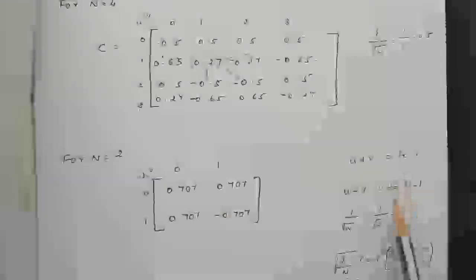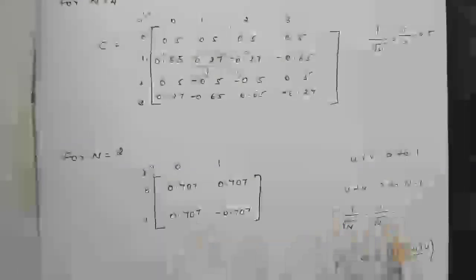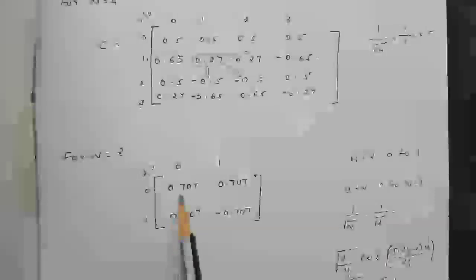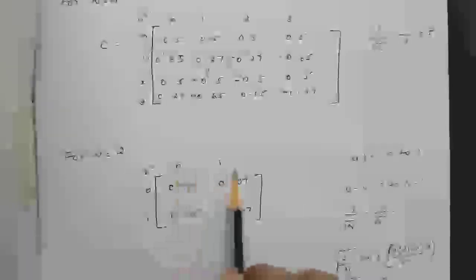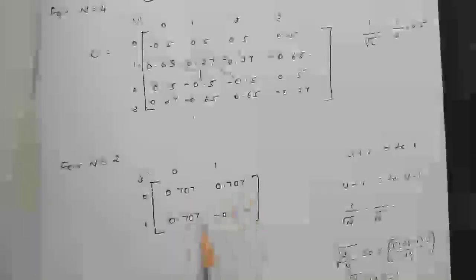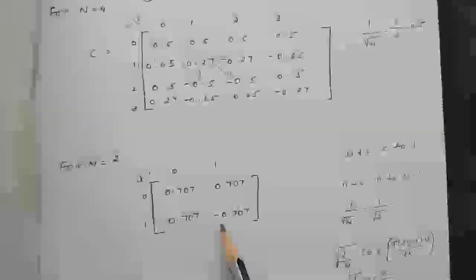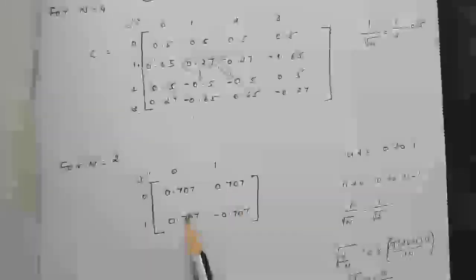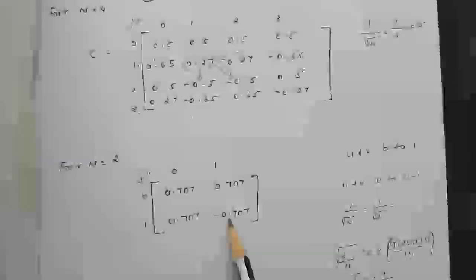For N = 2, U and V both vary from 0 to 1. When U = 0 and V varies from 0 to N−1, we get 1/√2 = 0.707, so the first row is 0.707, 0.707. When U = 1, we substitute into the equation to get the second row. The result is easy to remember: all magnitudes are 0.707, with only one sign change — the last element of the second row becomes −0.707.